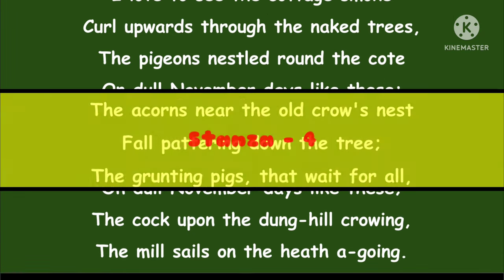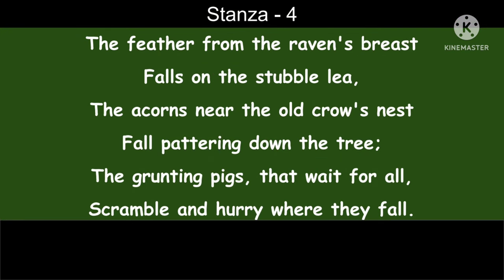Stanza 4: 'The feather from the raven's breast falls on the stubble lea. The acorns near the old crow's nest fall pattering down the tree. The grunting pigs that wait for all scramble and hurry where they fall.'